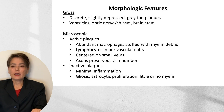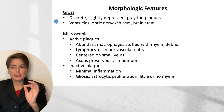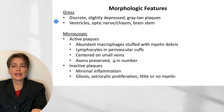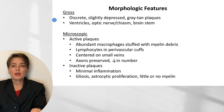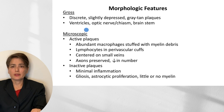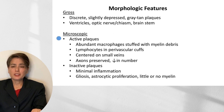Morphologically, we can see a number of features. Grossly, we will see multiple discrete, sharply edged, gray-tan lesions that are slightly depressed. These lesions can also be seen on radiology. While they can appear throughout the central nervous system, they're most commonly going to be in the ventricles, optic nerve and chiasm, as well as the brainstem. Microscopically, we differentiate between active plaques and inactive plaques.